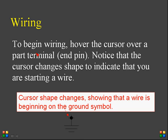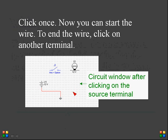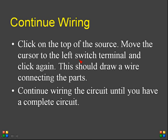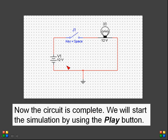To begin wiring, move the cursor over a part terminal — the endpoint. The cursor changes shape to indicate that wiring has started. Click with a left click and the wiring starts, continuing until it reaches the DC power supply — make a single click to end it there. Click on another terminal to end the wire. Continue wiring to form a closed circuit, clicking on the top of the source and moving the cursor to the switch terminal. Continue until the complete circuit is wired.